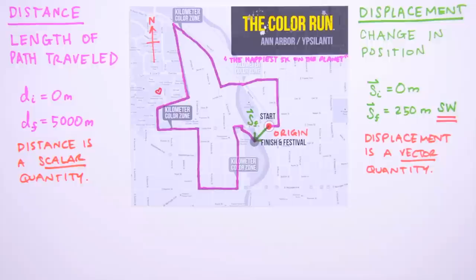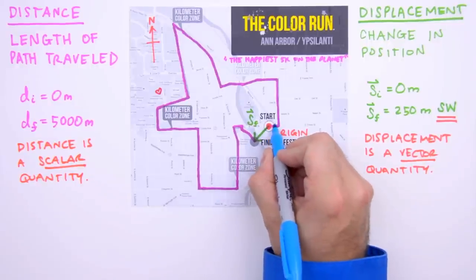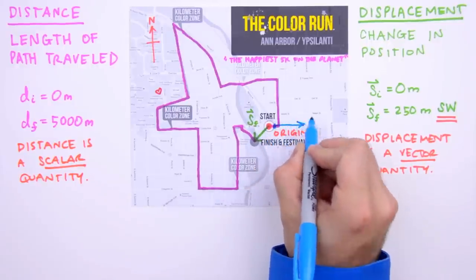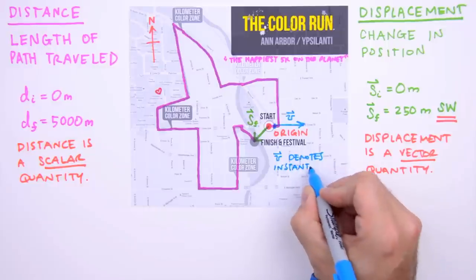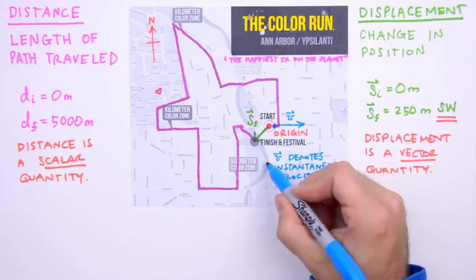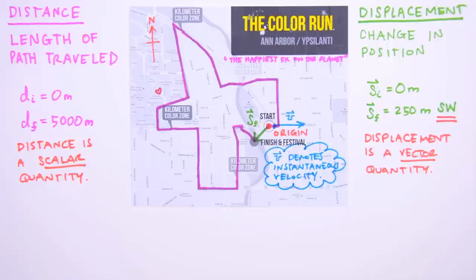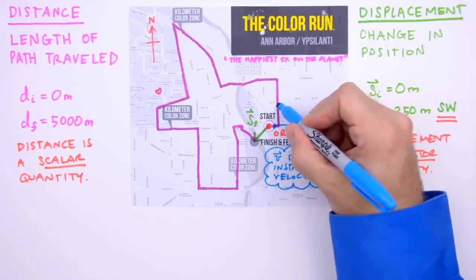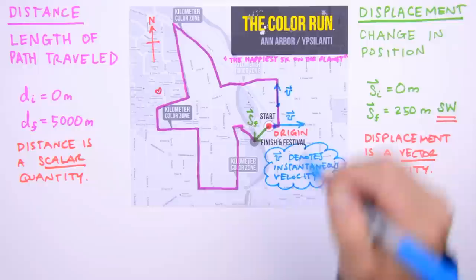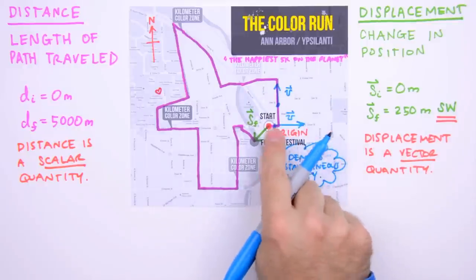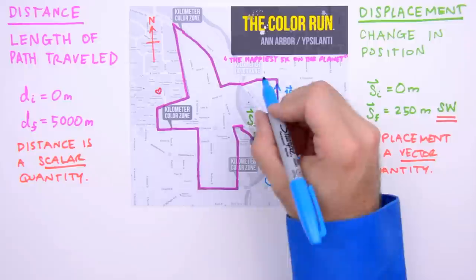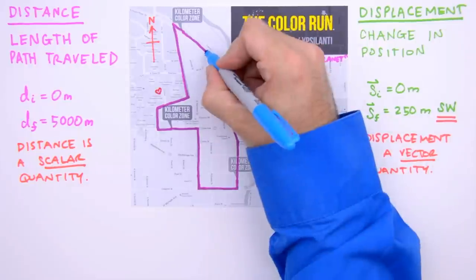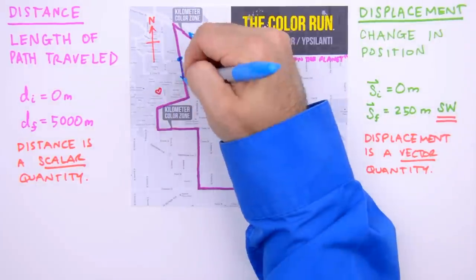Now we can turn our attention to speed and velocity. Let's suppose that our runner leaves the starting line traveling eastward at a couple meters per second — we'll indicate this motion with an arrow. This arrow, like the displacement arrow drawn in green, is a vector arrow, and it represents the magnitude and direction of the runner's instantaneous velocity, or velocity at that instant. Since the magnitude and direction of the runner's instantaneous velocity change throughout the race, we'll traverse the course indicating different velocities for the runner. Notice that the second velocity vector arrow is shorter than the first, implying that the runner is moving more slowly at the second position.